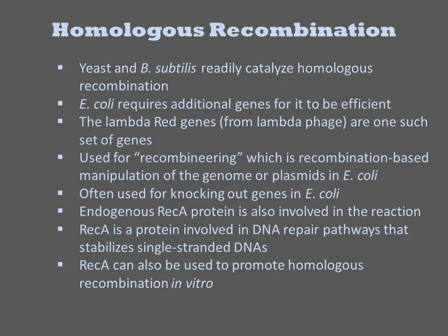The other type of recombinases are the sequence-independent ones, and they are used primarily in vivo. Yeast and B. subtilis cells readily catalyze homologous recombination between two very similar sequences. E. coli can also do it, but it requires additional genes for it to be efficient. This is most often satisfied by introduction of the lambda phage red genes. This process is useful for recombineering, which is recombinase-based manipulation of the genome or plasmids in E. coli using synthetic DNAs. The most common example involves deleting specific genes in the genome by recombination with an antibiotic selection marker flanked by sequences homologous to the gene.